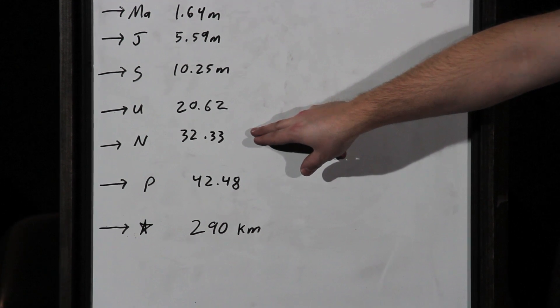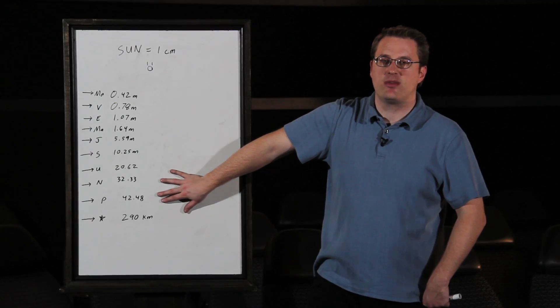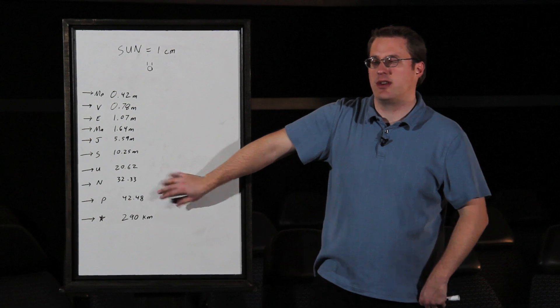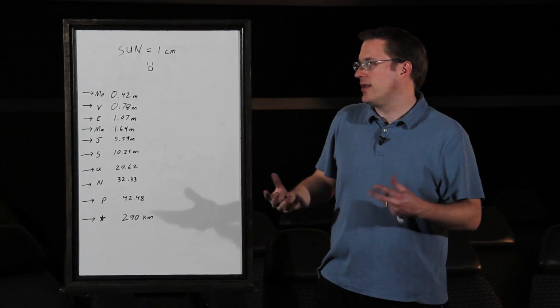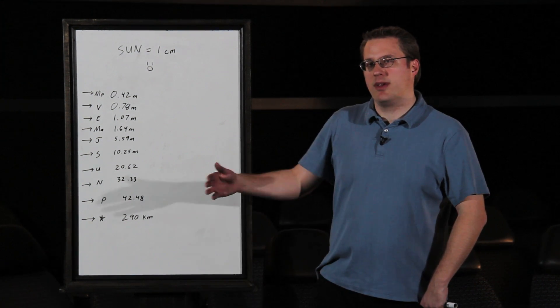Pluto's not a planet anymore, but I left it on this just so you know where it's at. It's 42 and a half meters away. It's really far out there from the sun now, and you're just your little tiny small sun. All these other objects are just little specks. You can't even see them, but they're really, really far away.